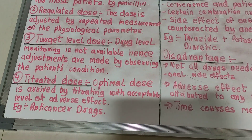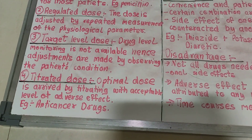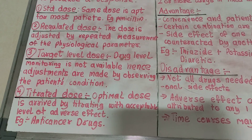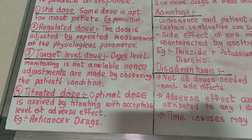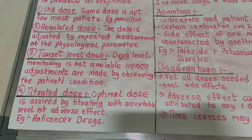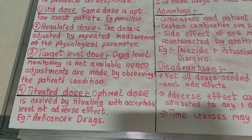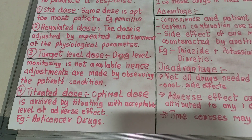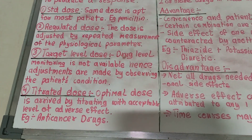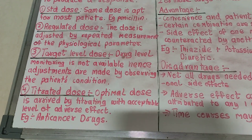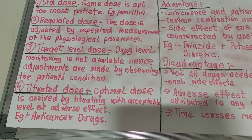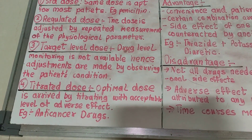The last type is the titrated dose. Here the optimal dose is arrived at by titrating with an acceptable level of adverse effect. There are adverse effects associated with high-power doses, so up to certain levels the adverse effects are allowed, and there is an optimal dose for that amount of adverse effect. Any higher dose can be fatal. Hence a particular dose limit is set with a known and recorded side effect — a higher or lower dose can be dangerous. A very good example is anti-cancer drugs.